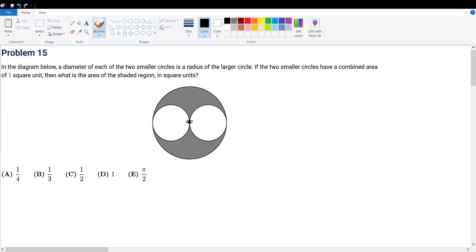If the two smaller circles have a combined area of one square unit, then what is the area of the shaded region in square units? Follow along with the question and we should be able to solve it.